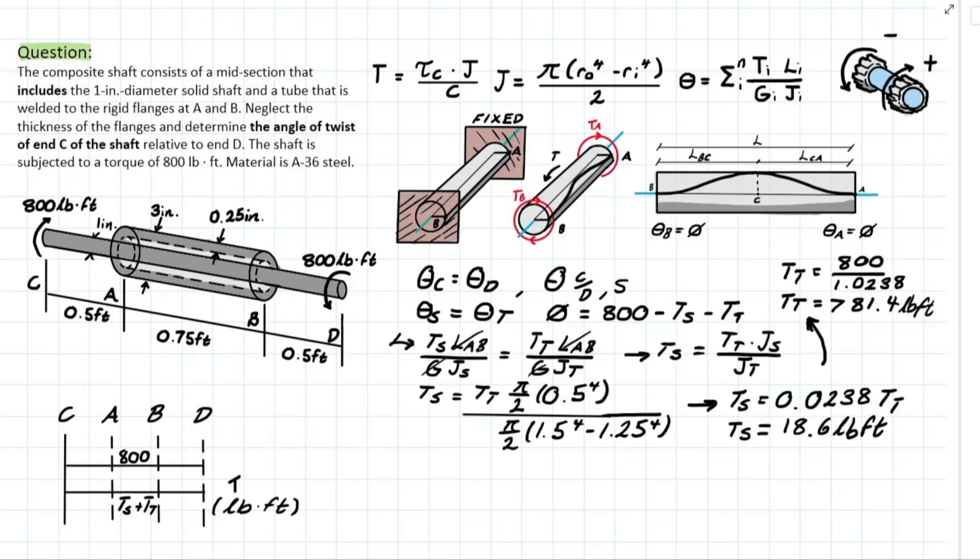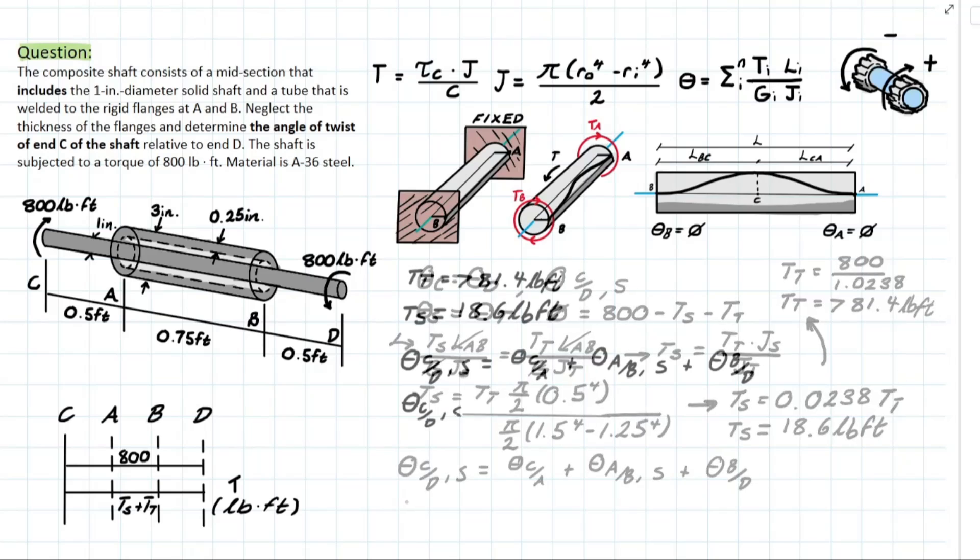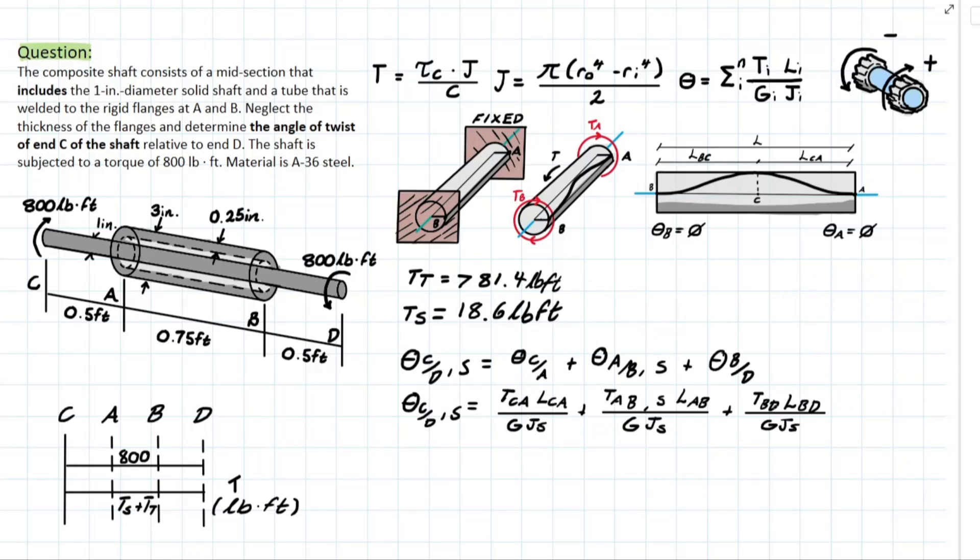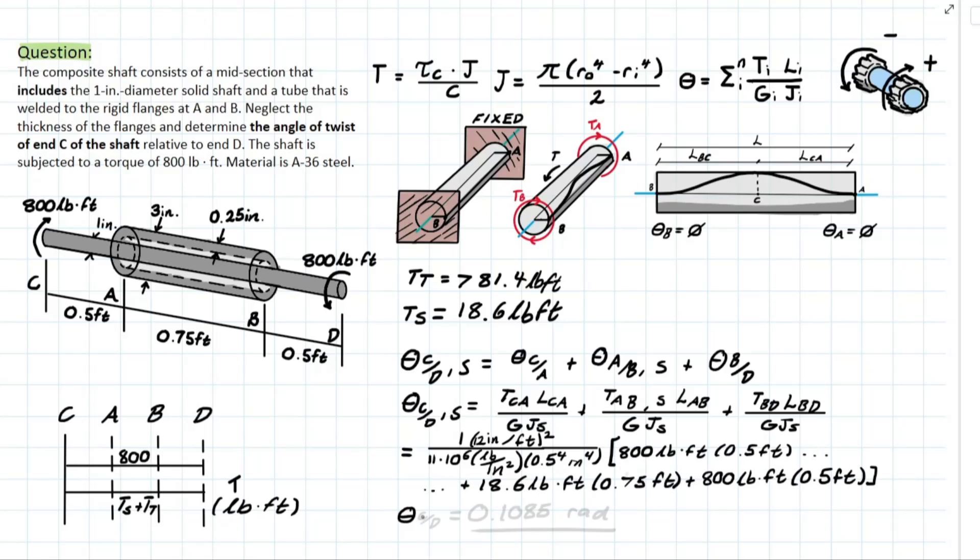Now we can finally solve for the angle of twist at C with respect to D. And we know what that formula is going to look like. But we have, starting at C and working this way, we have theta C over A plus theta A over B, but only for the shaft, because that's what the problem is calling for, and theta B over D. Now it's just simple plug and chug, and I'll skip to the end answer for you guys.